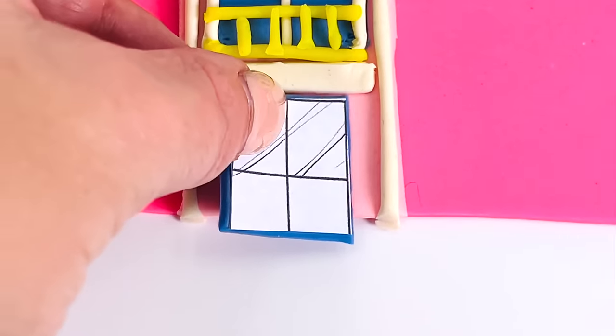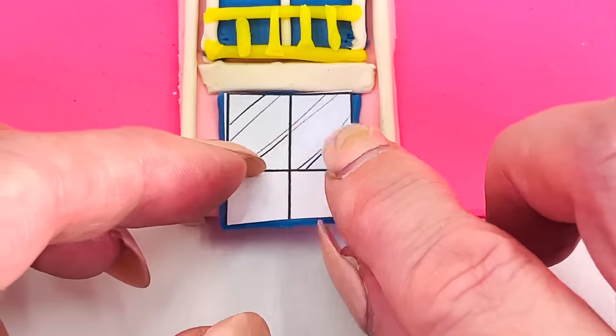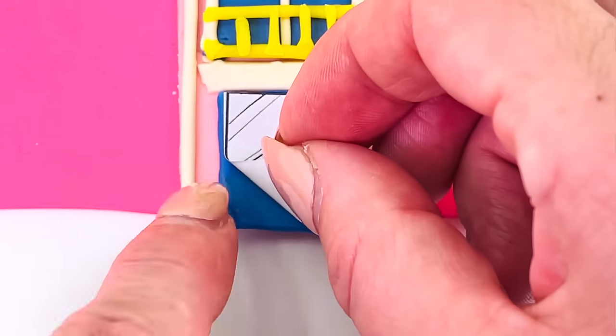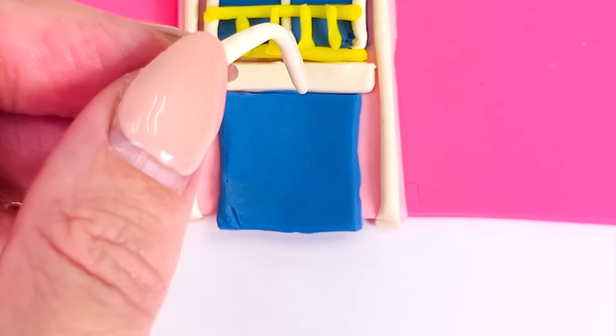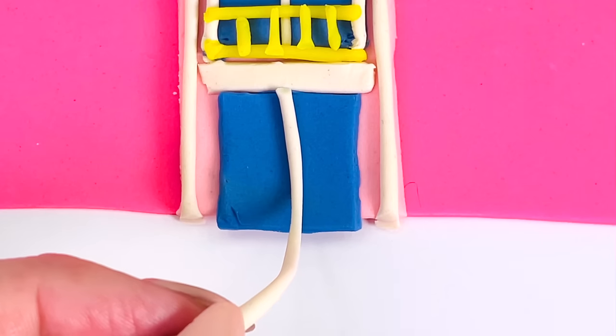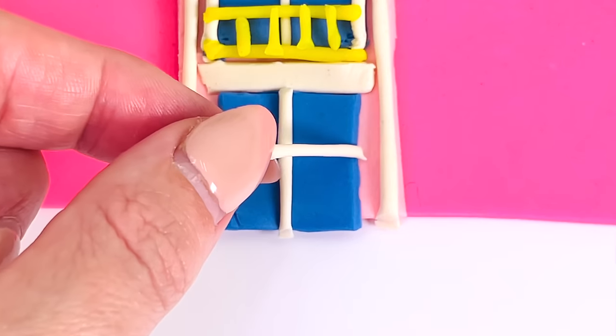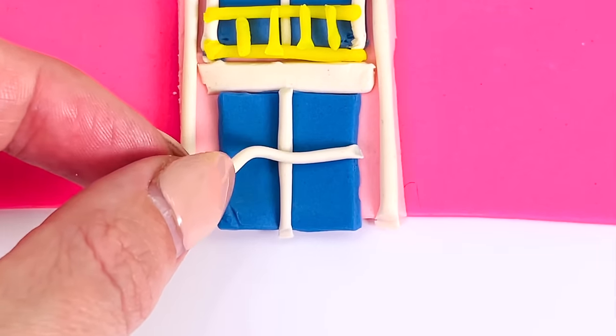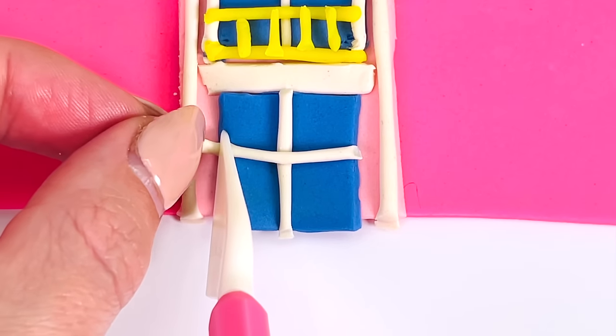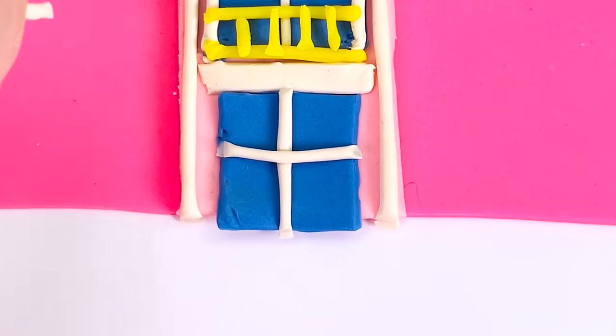And now a window at the bottom of the house. First I'll add a white vertical line going down the middle, and next a horizontal line going across. That's the middle of the house.